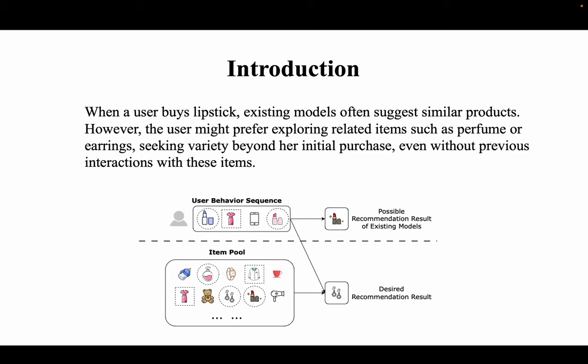Moreover, existing models often rely on target attention mechanisms, assigning higher scores to repetitive, similar items, reinforcing a cycle of homogeneity. In this figure, we provide an example. When a user buys lipstick, existing models often suggest similar products. However, the user might prefer exploring related items such as perfume or earrings, seeking variety beyond her initial purchase, even without previous interactions with these items.